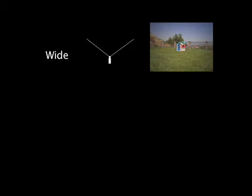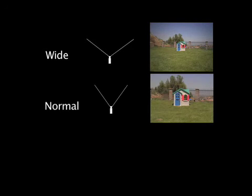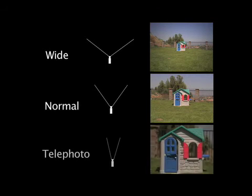Focal length effectively changes the subject's reproduced image size and the subject area covered by the lens, called the field of view. A wide angle lens decreases the subject's reproduced size and gives a wide field of view. A normal 35mm lens has an angle of view of approximately 45 degrees and produces a field of view that resembles that of the human eye. A telephoto lens increases the subject's reproduced size and gives a narrow field of view.